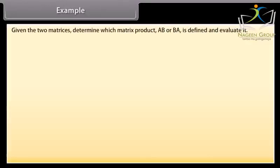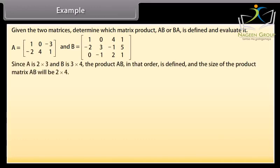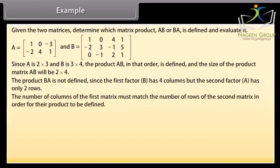Example: given two matrices, determine which matrix product AB or BA is defined and evaluate it. Since A is 2 by 3 and B is 3 by 4, the product AB is defined and the size of the product matrix AB will be 2 by 4. The product BA is not defined since the first factor B has 4 columns but the second factor A has only 2 rows. The number of columns of the first matrix must match the number of rows of the second matrix for their product to be defined.